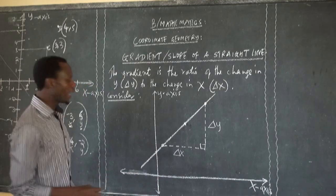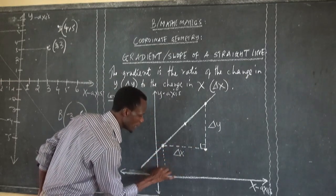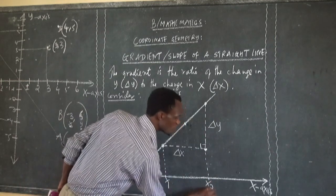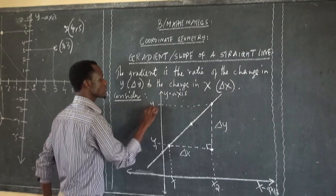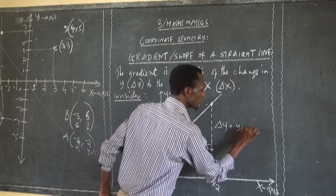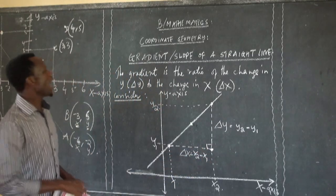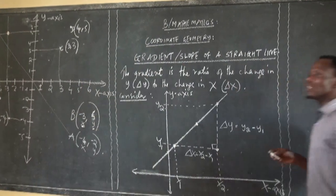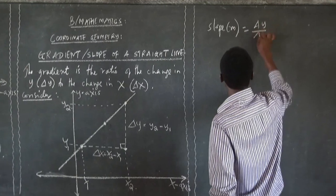From here, I can determine using this line and this point. Let me draw the line to the x-axis. This is the second point. This is x1 and this is x2. Similarly, this is y1 and this is y2. When I say change in y, I mean y2 minus y1. And when I say change in x, I mean x2 minus x1. Therefore, the gradient is the ratio of the change in y to the change in x — slope m equals change in y over change in x.